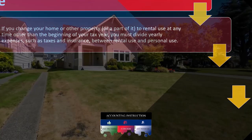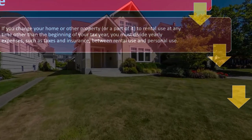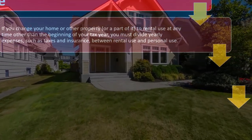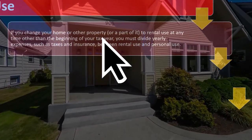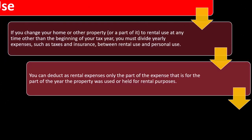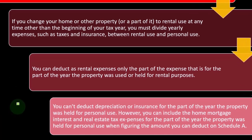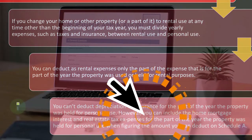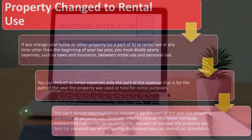If you change your home or other property to rental use at any time other than the beginning of your tax year, you must divide yearly expenses such as taxes and insurance between rental use and personal use. You can deduct as rental expenses only the part of the expenses for the part of the year the property was used or held for rental purposes. You can't deduct depreciation or insurance for the part of the year the property was held for personal use. However, you can include home mortgage interest and real estate tax expenses for the personal-use portion when figuring the amount you can deduct on Schedule A.